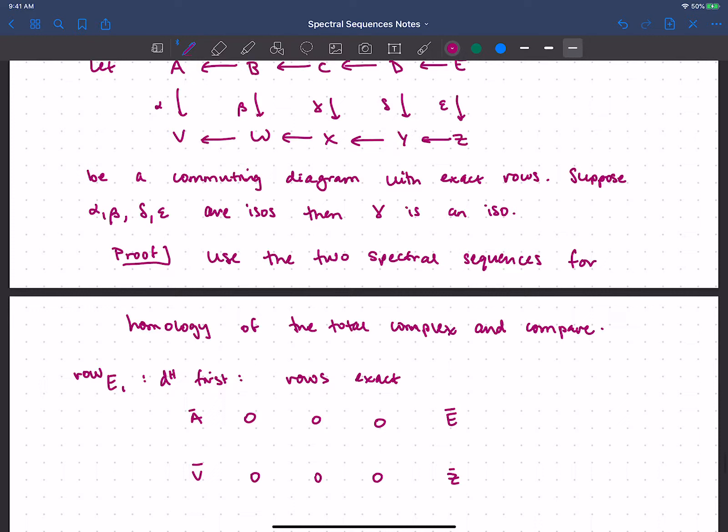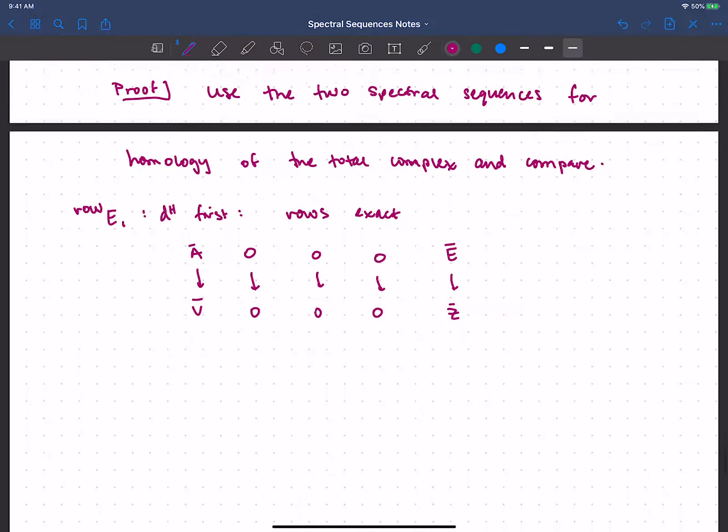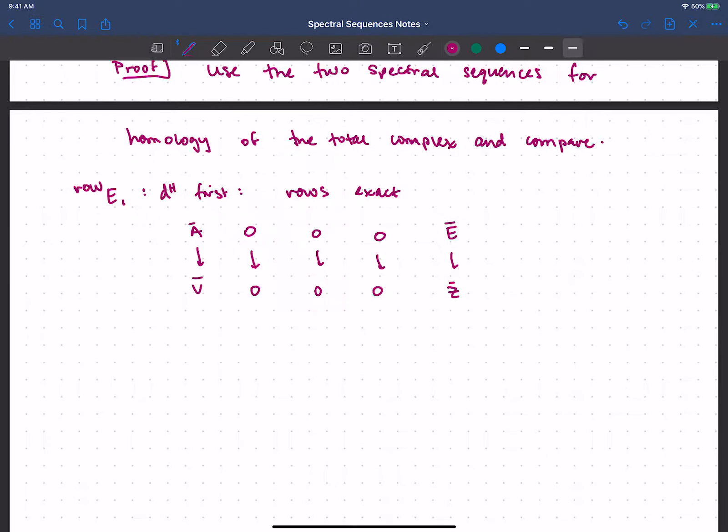But now, I should on the next page, on this E_1 page, use the vertical maps. Of course, the maps between the zeros are not particularly really interesting. I don't know what alpha and epsilon do on these things, so let me not worry about it. But let's just compare it to going the other way.